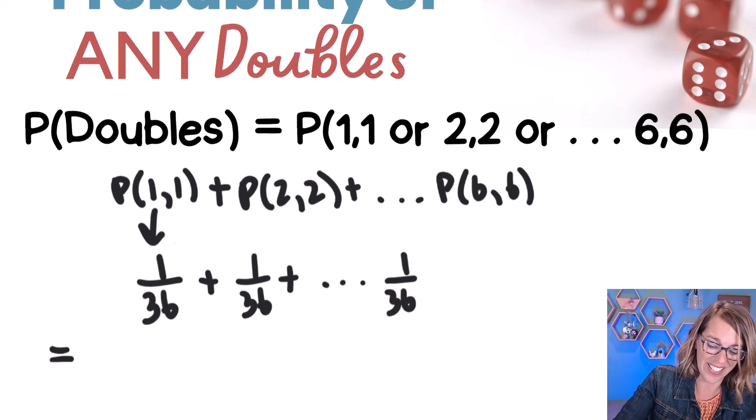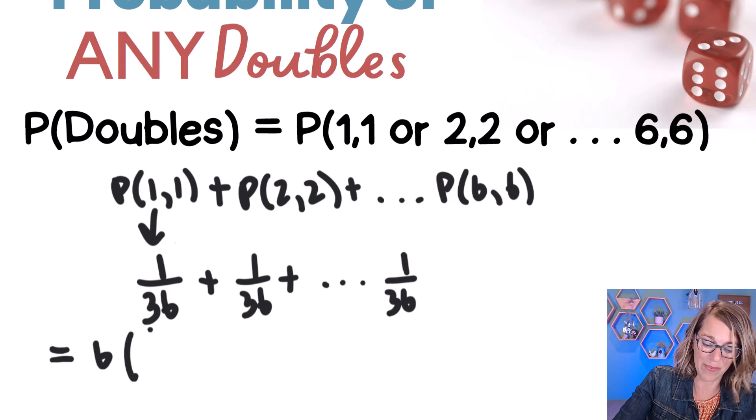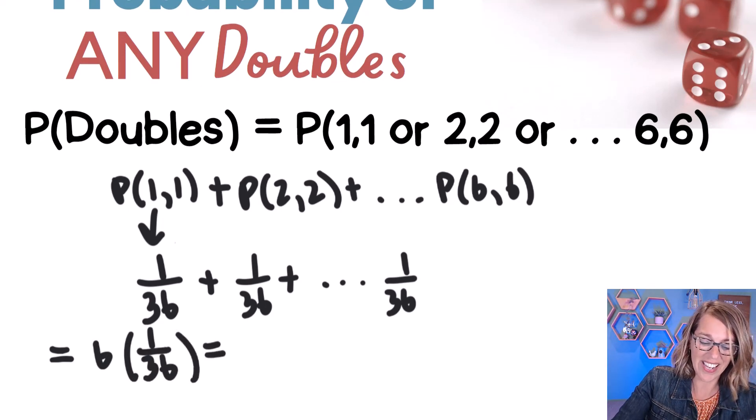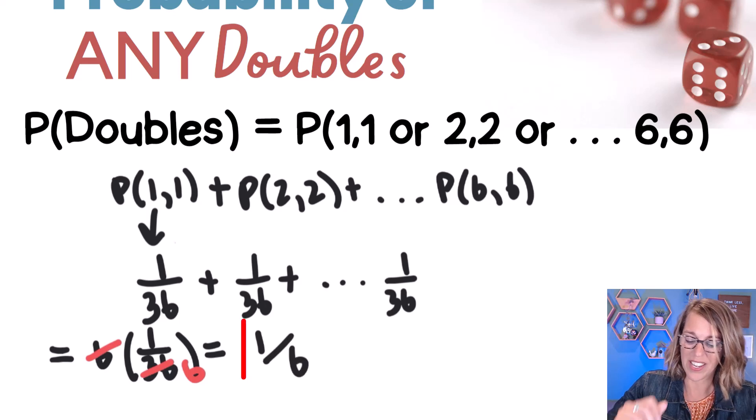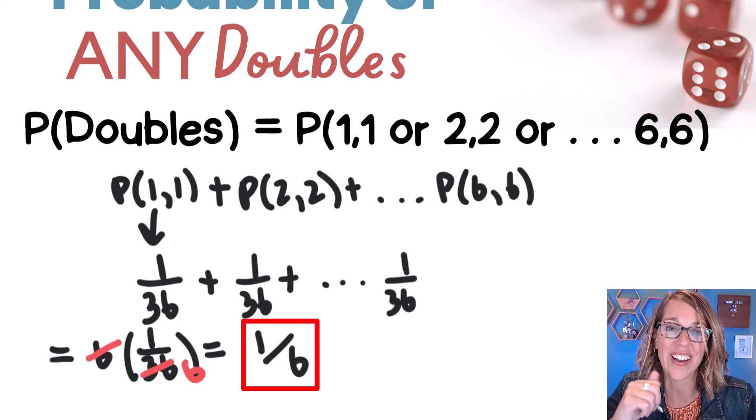So I can write this as six times one out of 36. Now I can cancel that six into the 36, that leaves me with a six there, and I end up with this really nice probability of getting any doubles of one out of six.